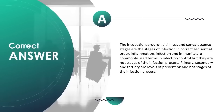Inflammation, infection, and immunity are commonly used terms in infection control but are not stages of the infection process. Primary, secondary, and tertiary are levels of prevention, not stages of the infection process.